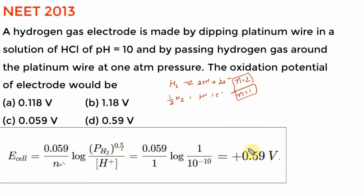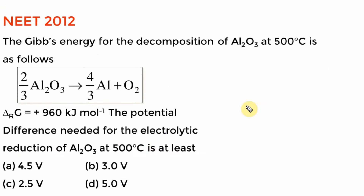Here is an interesting problem — it looks complicated but is one of the simplest problems in electrochemistry. The free energy for the decomposition is given as +960 kJ. Make sure you note it is in kilojoules. The potential difference needed for the electrolytic reduction — we know ΔG is related to E° by ΔG = −nFE°. The complicated part is calculating n.